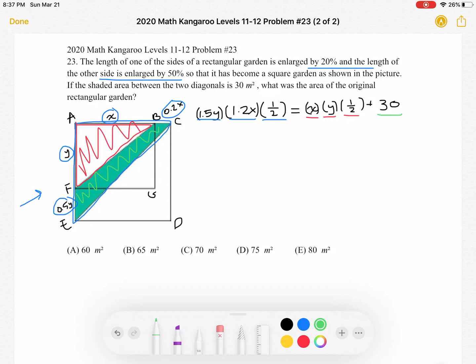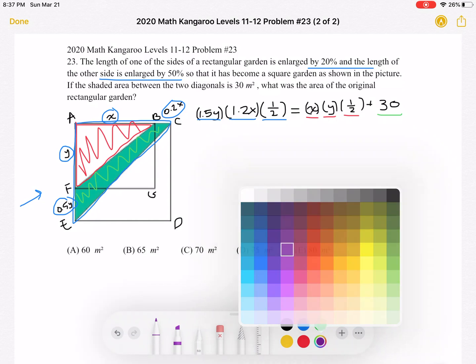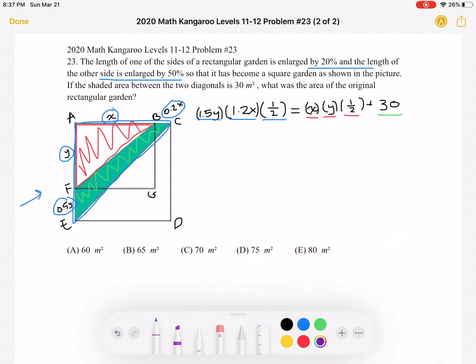So from here, we're just going to be simplifying. One of our first simplifying steps, let's multiply by 2 on both sides to get rid of this 1 half, and then this will become 60. And I've also rewritten this 1.5Y as 3 halves Y and 1.2X as 6 fifths X in order for it to be easier for us to simplify. And then we have 3 halves Y times 6 fifths X is equal to XY plus 60.